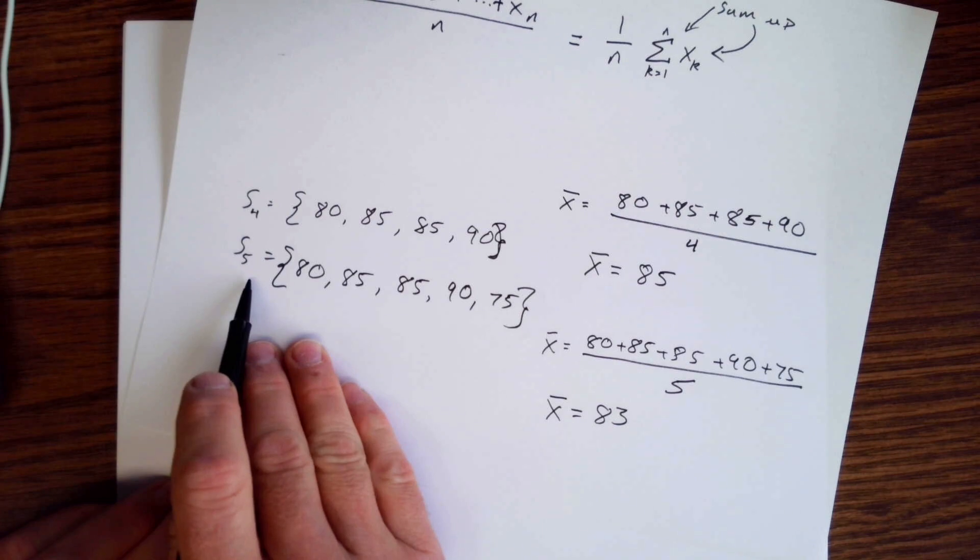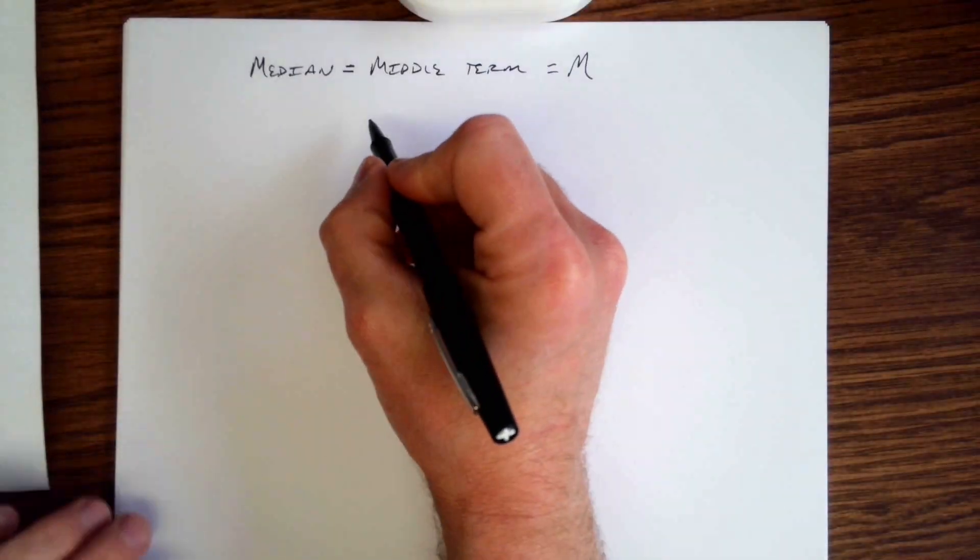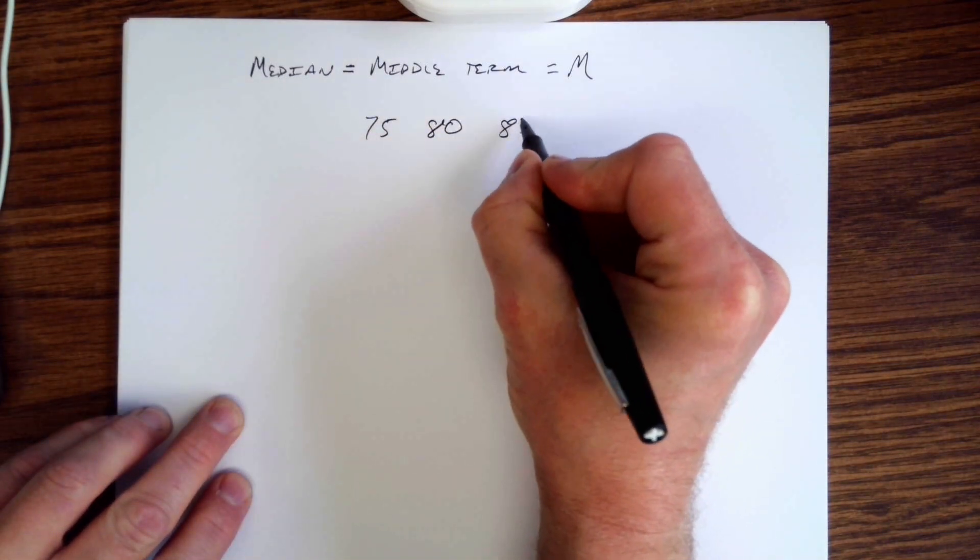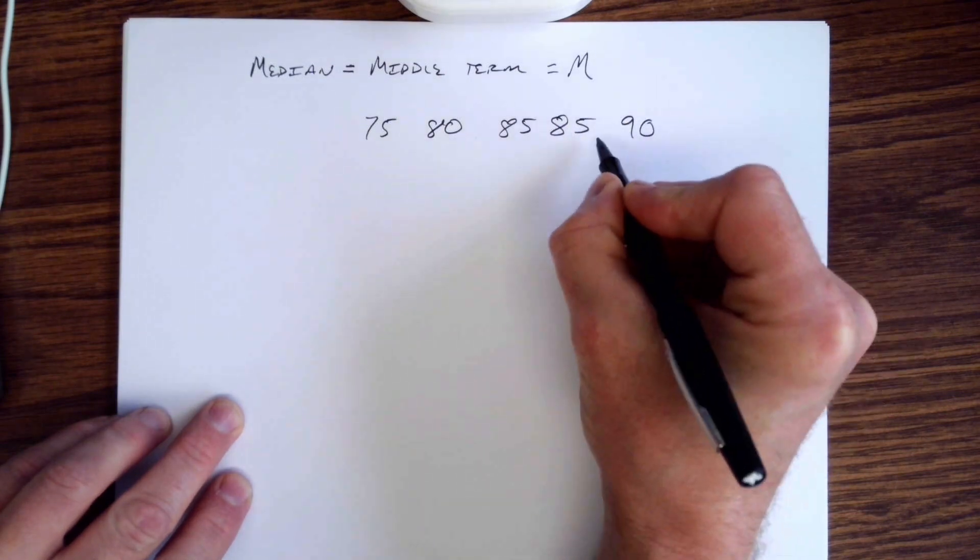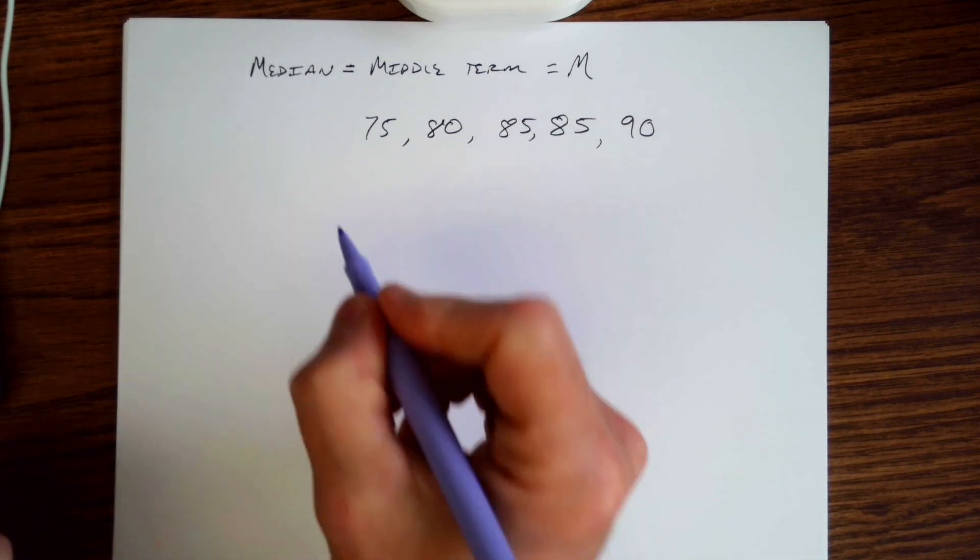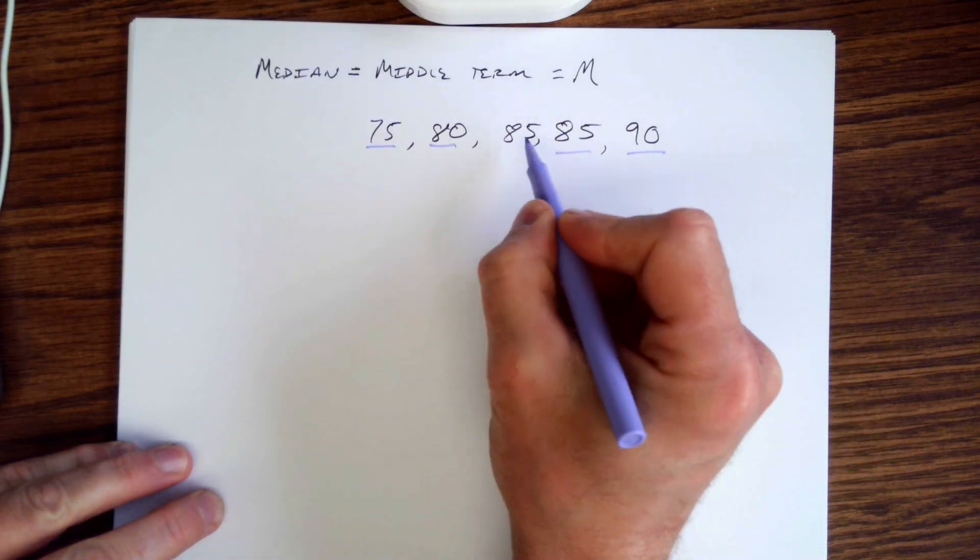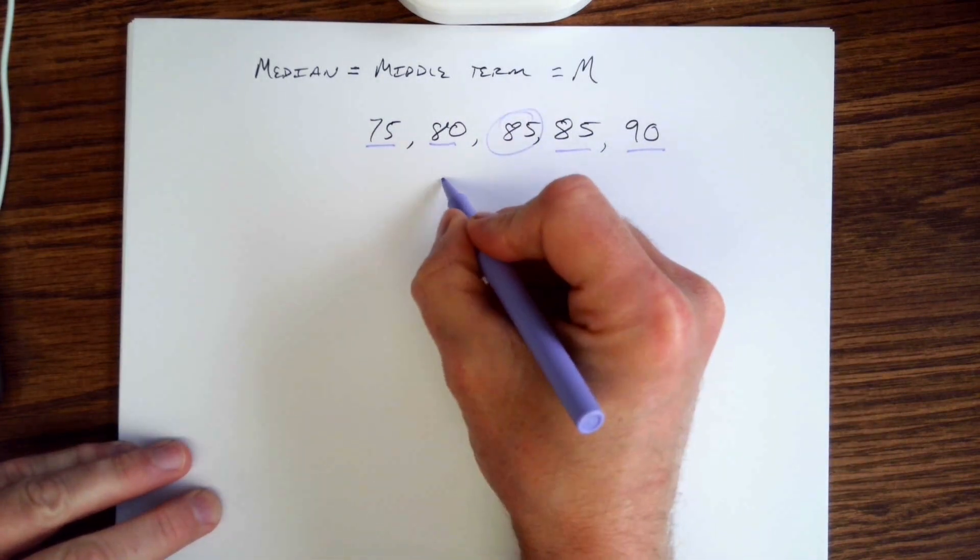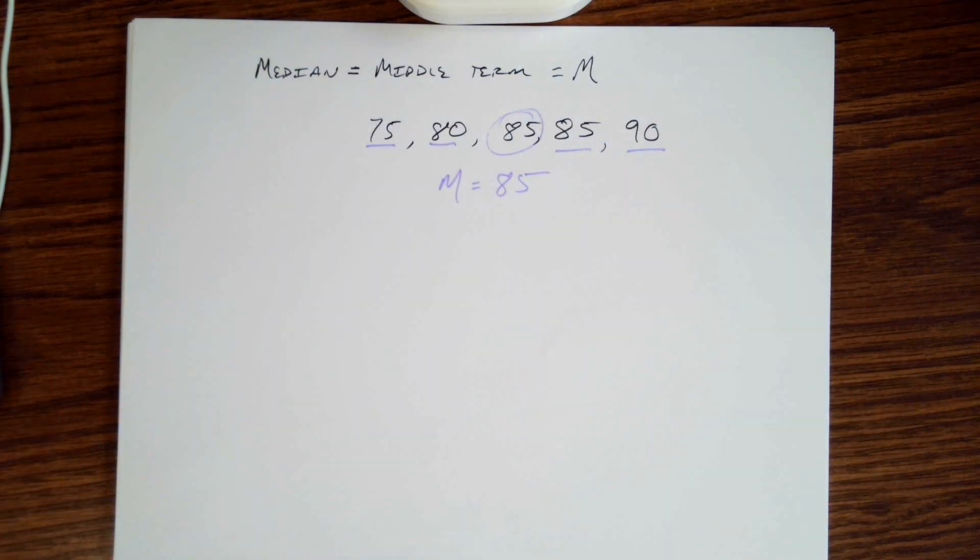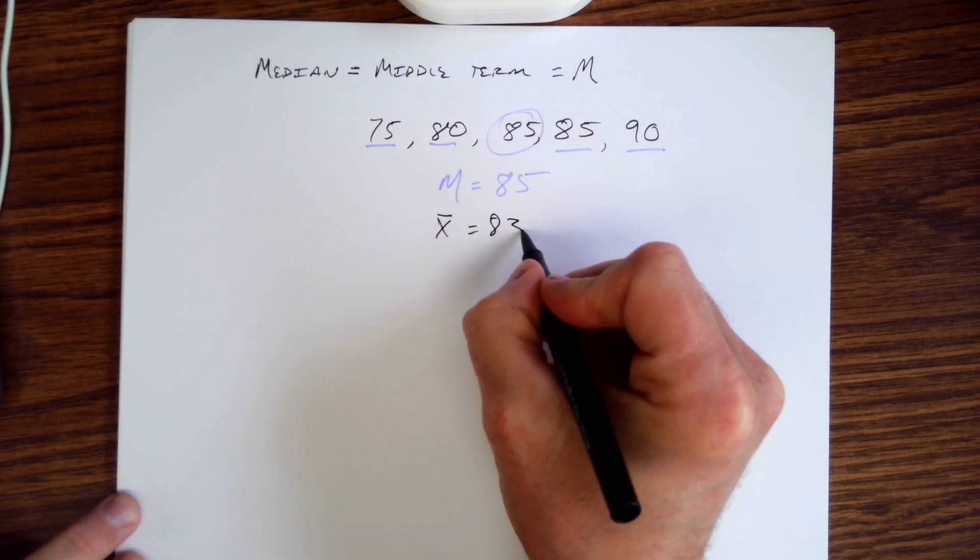What that means is it's the value that's in the middle, so it is exactly the value where half is below and half is above that particular value. With that previous data set we had—s sub five is the one we're going to look at first—we have five data points. The first thing we need to do with those data points is put them in order: 75, 80, 85, 85, and 90. What we want is to find the one that's in the middle. We got first and last term, second and second to last term, middle term right there. So our median here is 85.